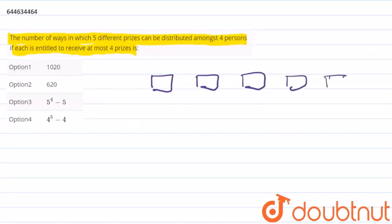So we have been given that there are five prizes, so let us name these prizes as one, two, three, four and five. And we have been told that there are four persons: P1, P2, P3 and P4.